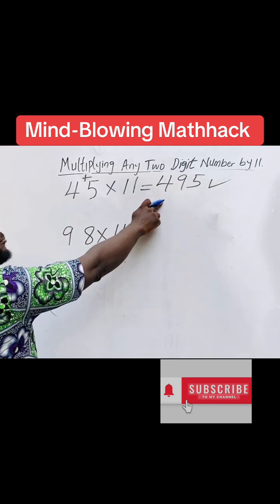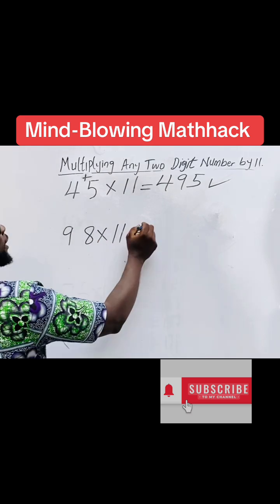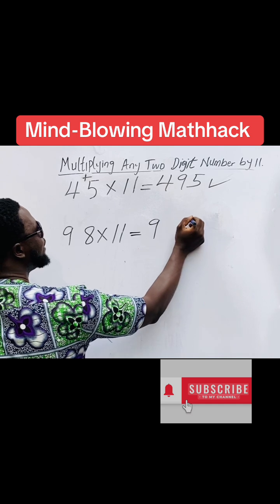Very sharp, thank you. So let's check the next one again, 98 times 11. You write down 9 and 8.